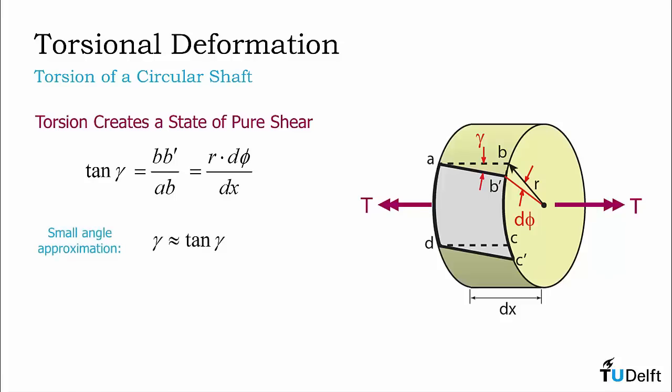Since we expect shear strain in real materials to be small, we can apply a small angle approximation where the tangent of our angle gamma is approximately equal to the angle itself in radians. Applying this approximation to the equation above, we can rearrange it to obtain that the shear strain gamma is equal to the infinitesimal angle of rotation of the segment d phi divided by the infinitesimal width of our segment dx, multiplied by radius R.